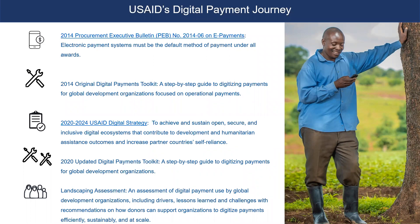Fast forwarding to 2020, USAID's first ever digital strategy was launched in April of this year. The strategy's overarching goal is to achieve and sustain open, secure, and inclusive digital ecosystems that contribute to development and humanitarian assistance outcomes and increase partner country self-reliance. The digital strategy reaffirmed USAID's commitment to making digital payments the default method under all USAID contracts and awards, with appropriate exceptions — about nine exceptions exist under the guidance, such as humanitarian situations requiring immediate cash distribution in a short-term program.